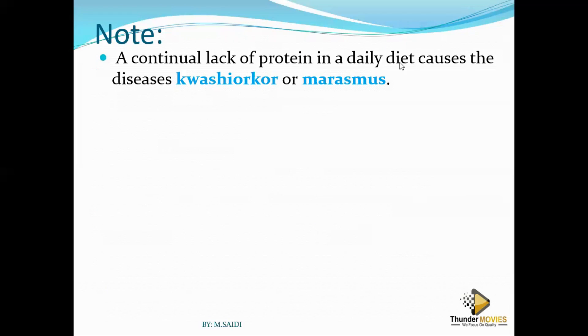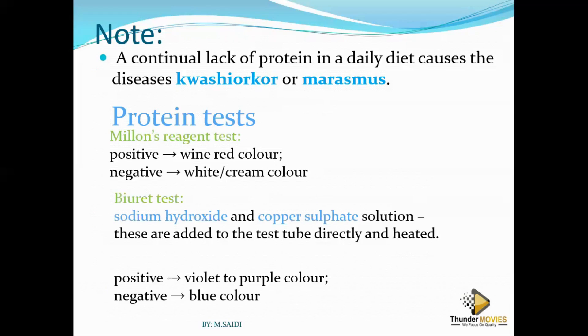Lack of proteins will cause what you call kwashiorkor, or it can lead to marasmus. How do you test for proteins?